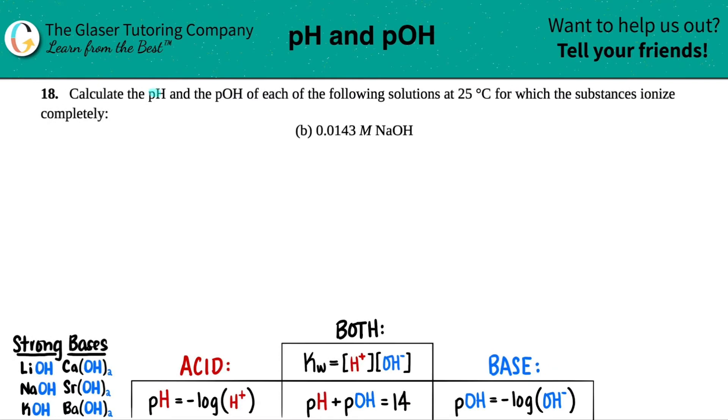Number 18. Calculate the pH and the pOH of each of the following solutions at 25 degrees Celsius for which the substances ionize completely. And then we have letter B. So in this case, they tell us that we have 0.0143 molarity NaOH. And from there, we have to find out the pH and the pOH.